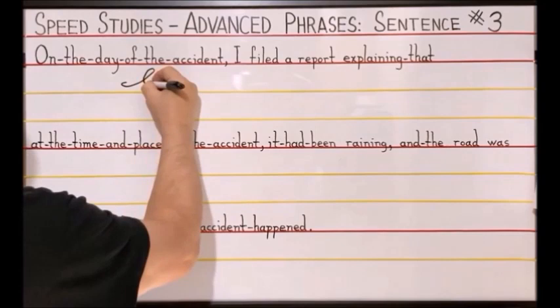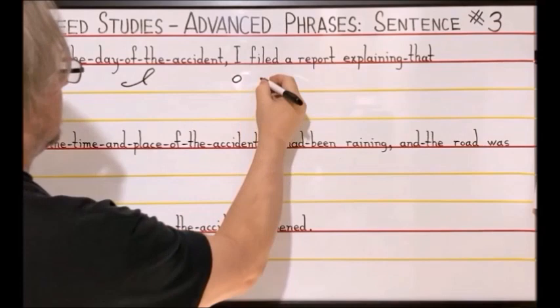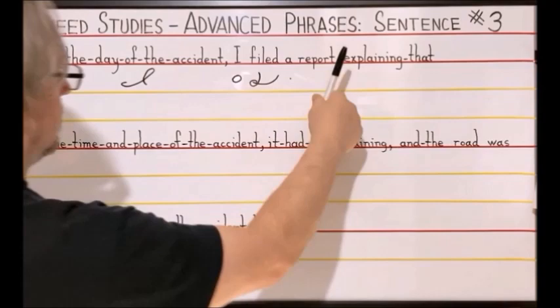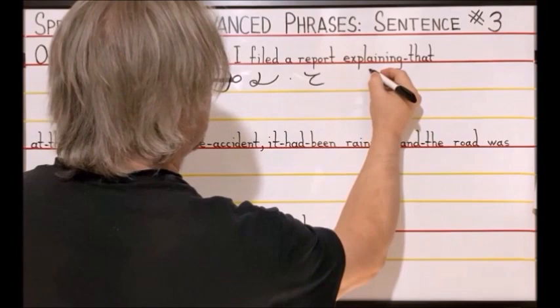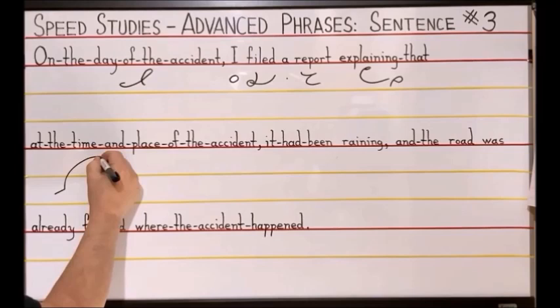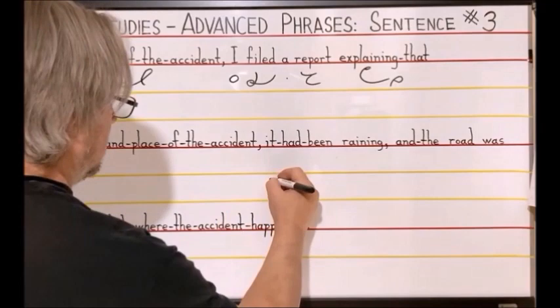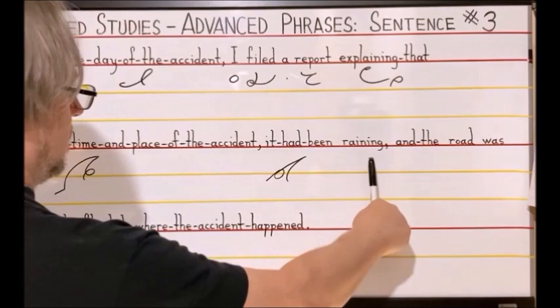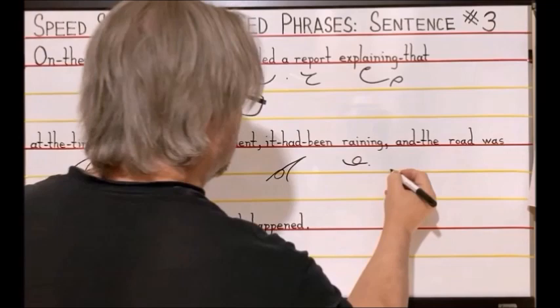On the day of the accident: O-N-D-stroke A-S, I-A filed: F-Long-I-L, tilted up for the D, dot for the A, report: R-P-R, explaining that: E-P-L-T-H-A, at the time and place of the accident: T-T-E-M-stroke P-A-S, it had been: T-A-D-B, raining: R-A-N dot for the I-N-G, and the: N-D-stroke T-H.